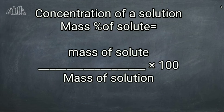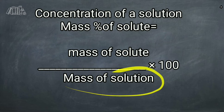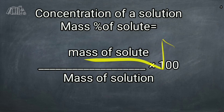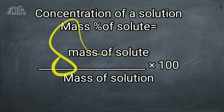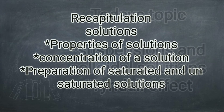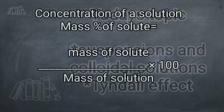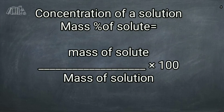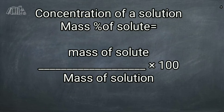A solution is nothing but the combination of solute and solvent. So mass of solution equals mass of solute plus mass of solvent. By combining both, you get the mass of solution, and by substituting that value you can find the mass percentage of solute. For volume percentage, it is the same approach but replacing mass with volume: volume percentage of solute equals volume of solute divided by volume of solution, multiplied by 100.